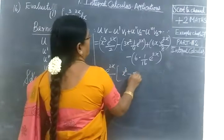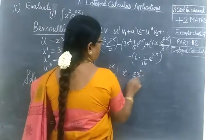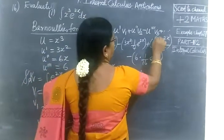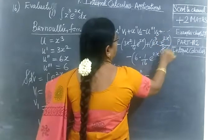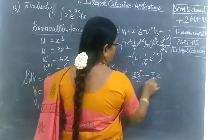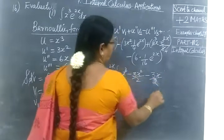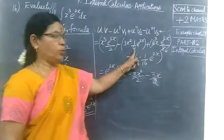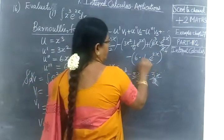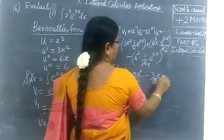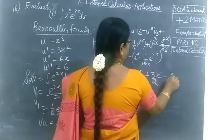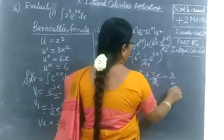This simplifies to e^(2x) by 2 times: x³ minus 3x² by 2 plus 3x by 2 minus 3 by 4.